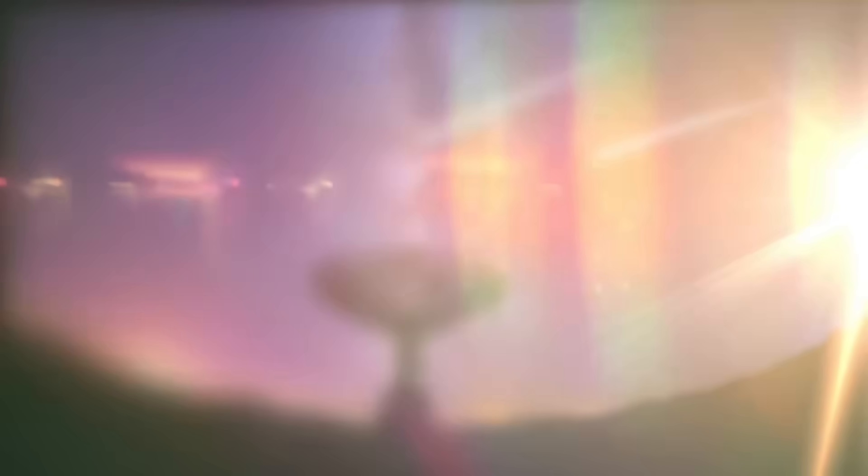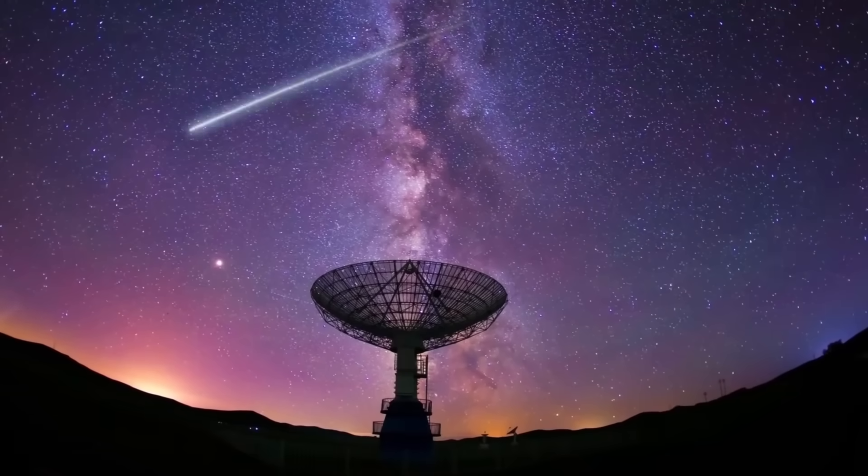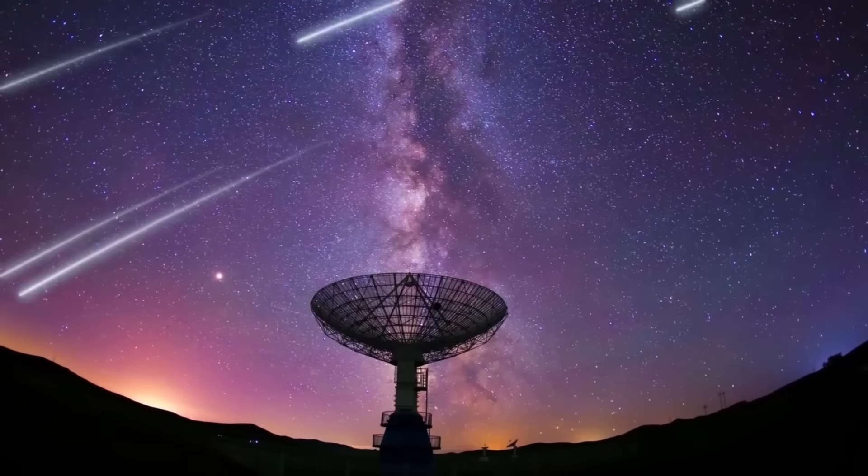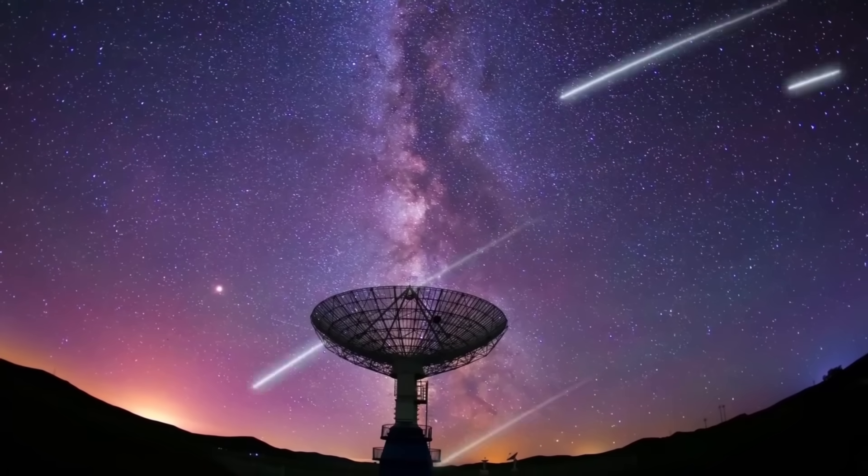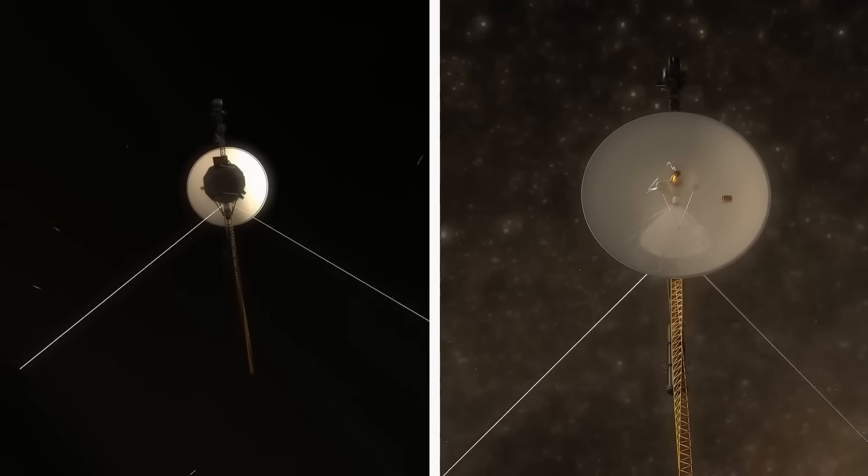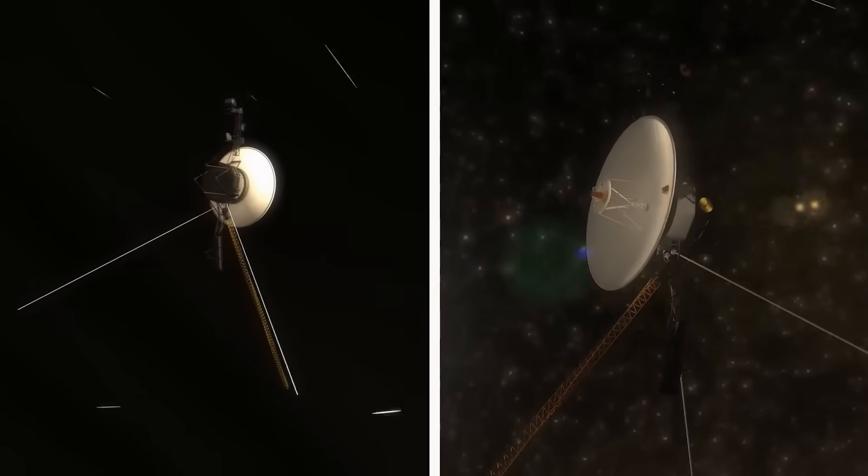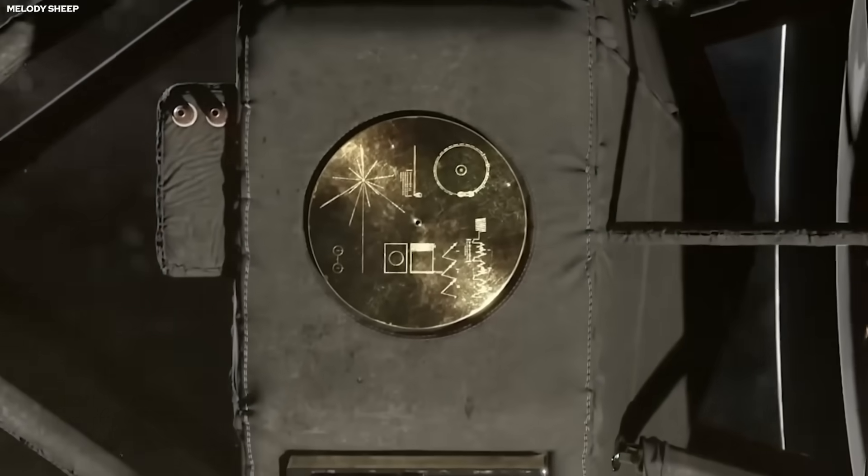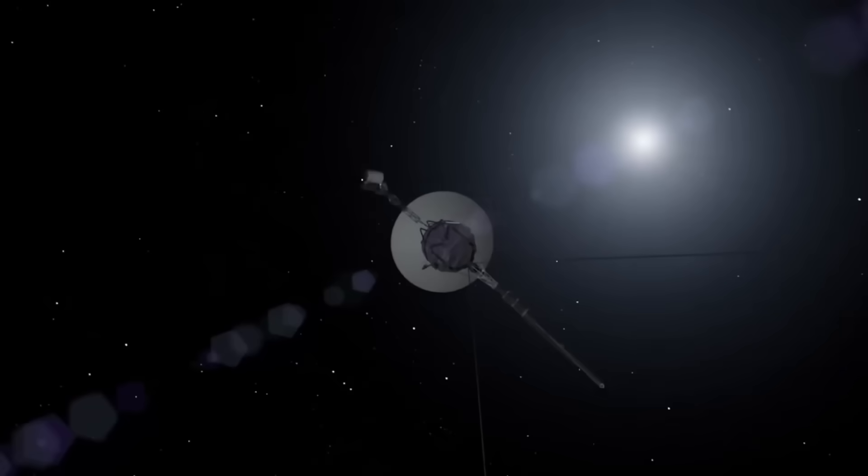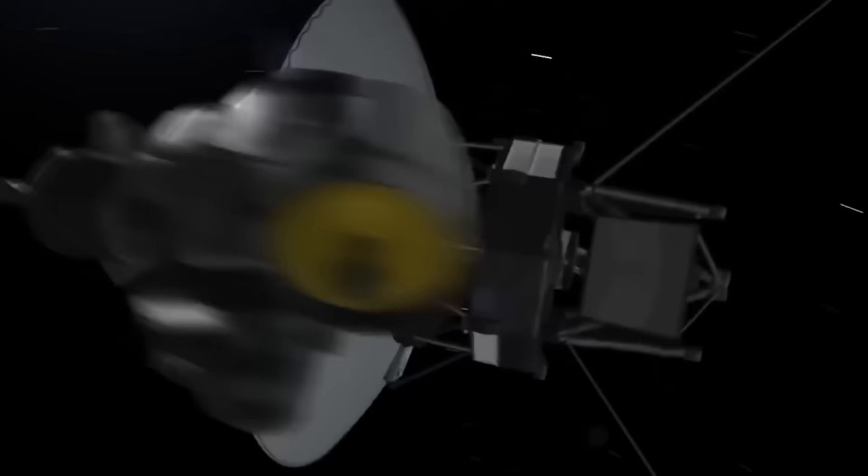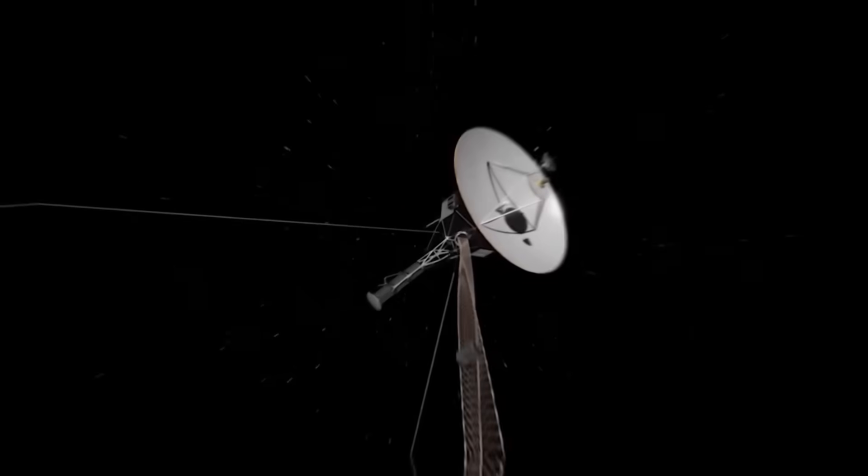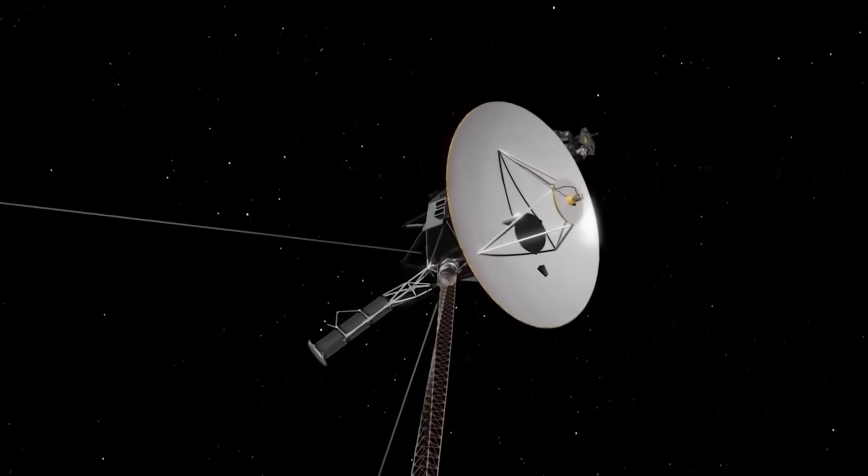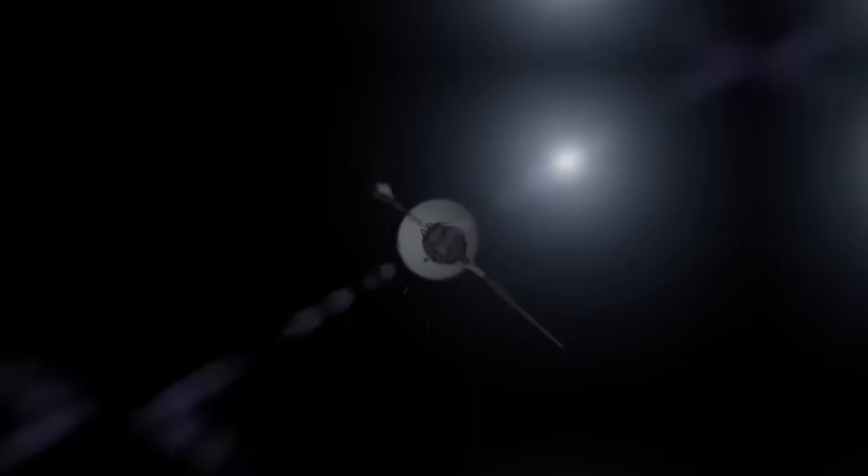After exploring the outer planets, Voyager proceeded to explore new areas outside of the sun's protective sphere. Interstellar space is reached by Voyager. The heliosphere, a vast bubble of charged particles and magnetic fields blasted outward by the solar wind, marks the separation between our solar system and the rest of the galaxy. The planets are protected from the full force of cosmic radiation by this bubble.